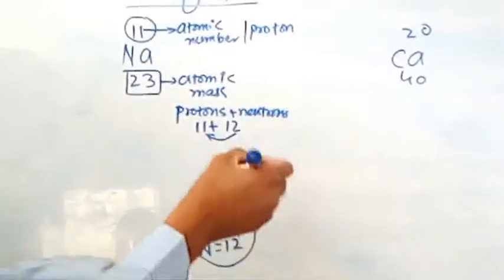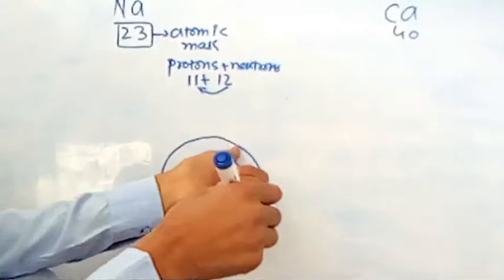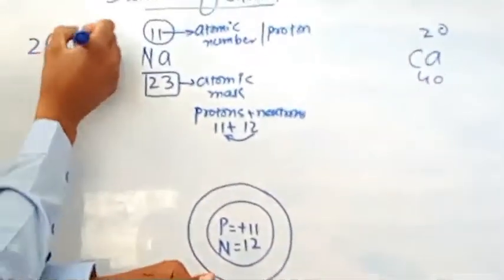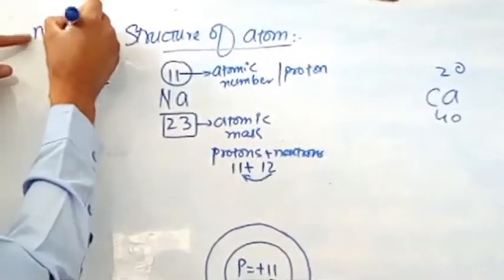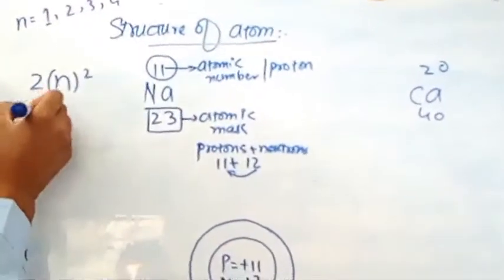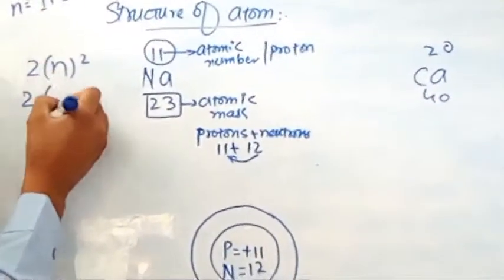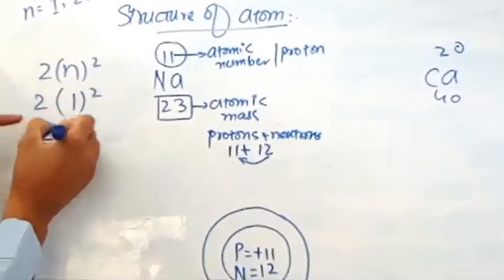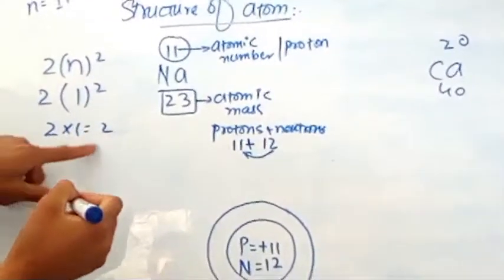Now we will make the shell. According to the formula 2n², n represents the shell number — first shell, second shell, third shell, fourth shell, etc. If we put n = 1 for the first shell: 2 × 1² = 2. So the first shell contains only 2 electrons.